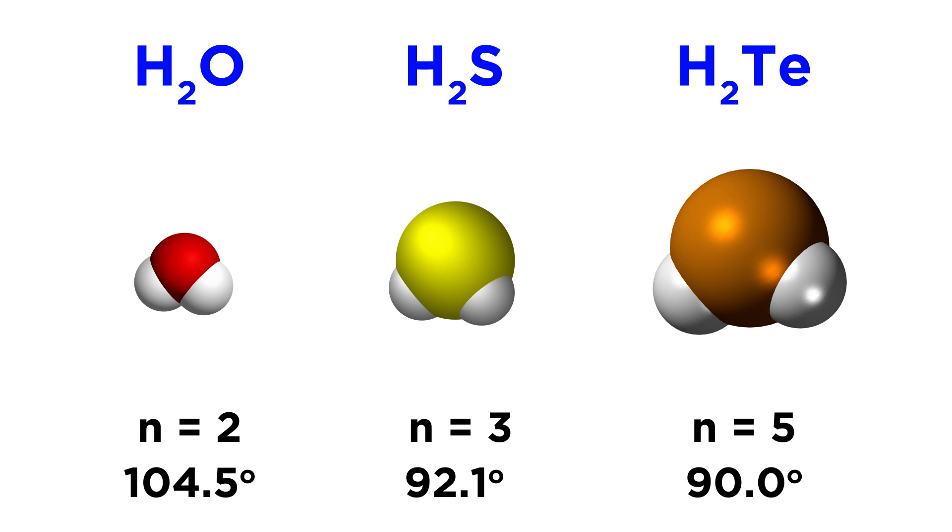Looking again at hydrogen sulfide, its valence electrons are in the N equals three shell, so the electron pairs are far away enough that the repulsion is minimal, but close enough that it is not negligible, so the sulfur atom will invoke a slight amount of hybridization. That's why the bond angle is close to ninety, but not quite equal to ninety.